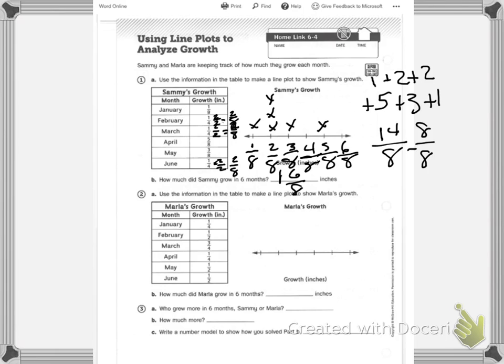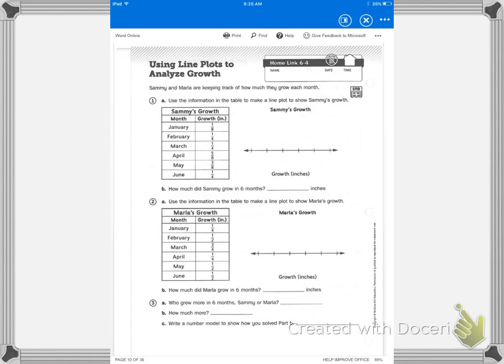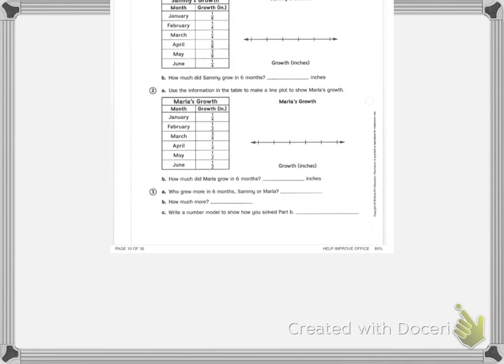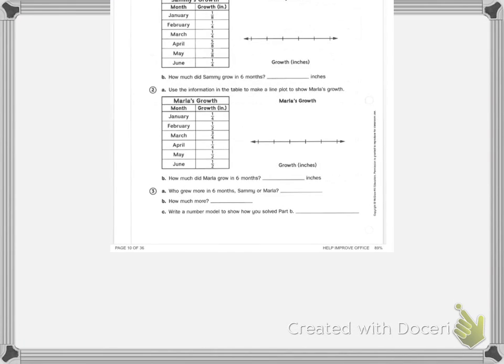You need to do the same for Maria's growth. Now, let's look at question 3. It says, who grew more in 6 months, Sammy or Maria?